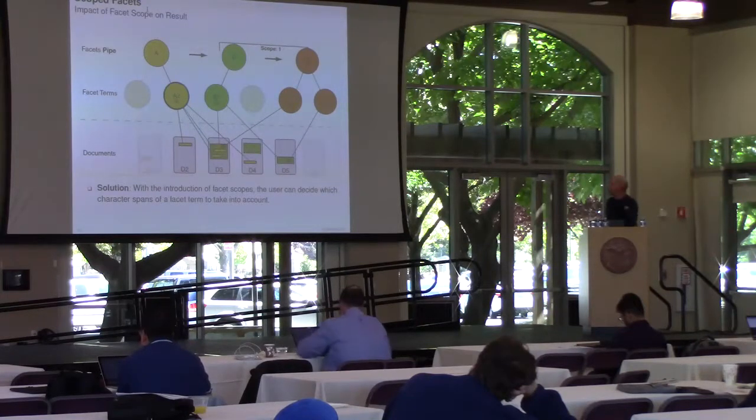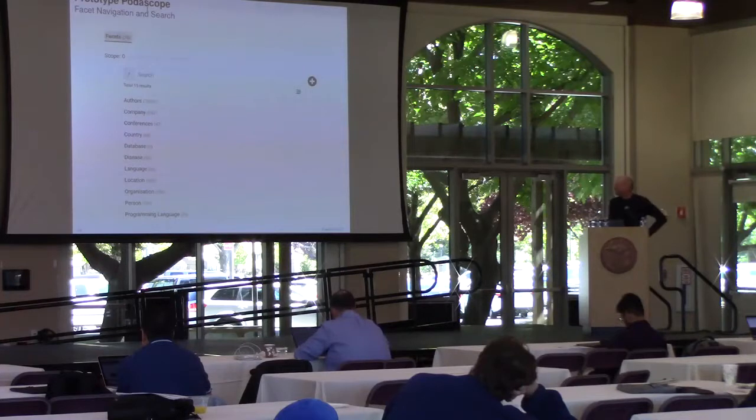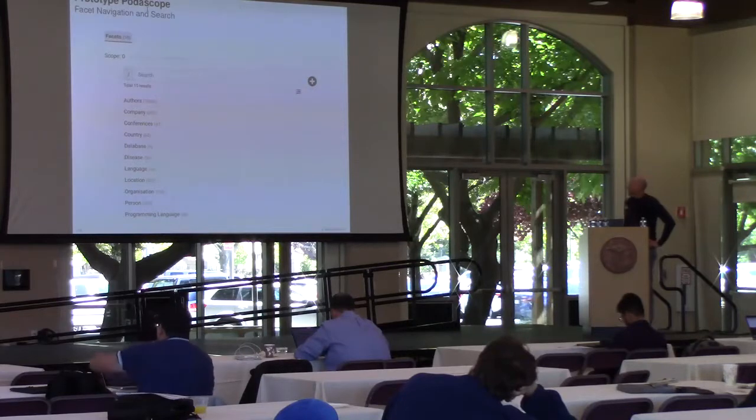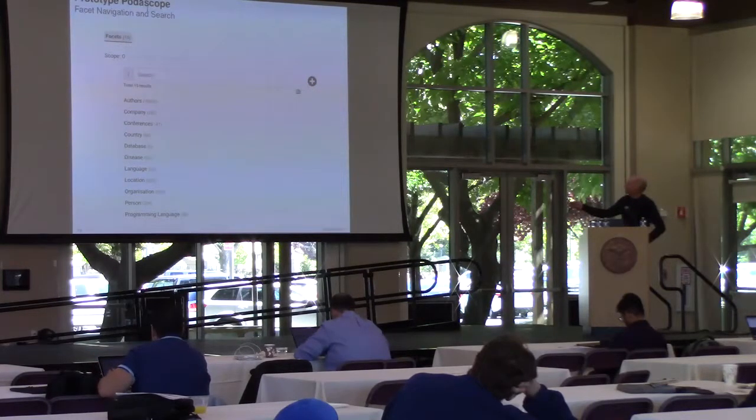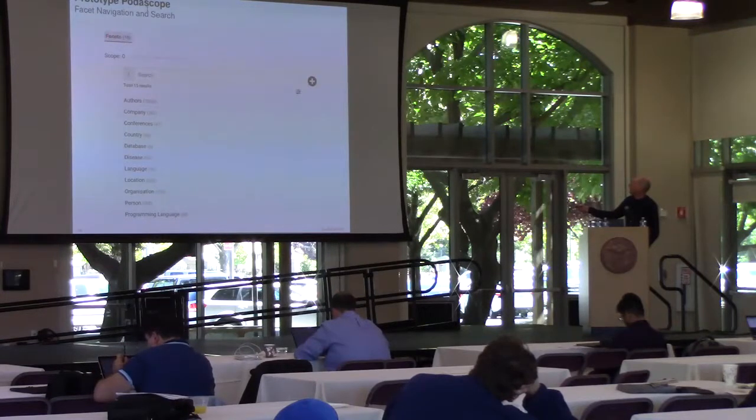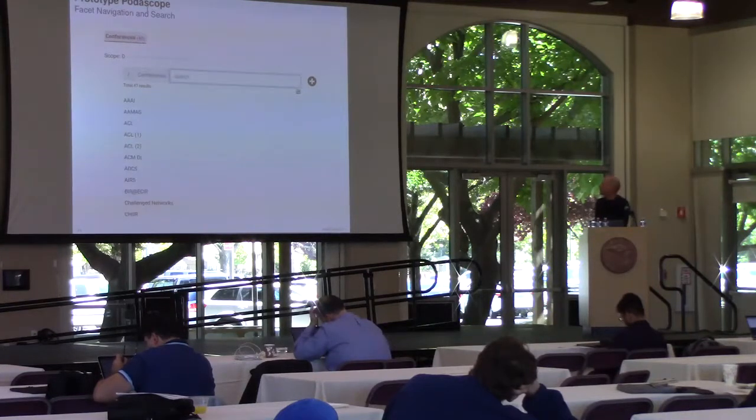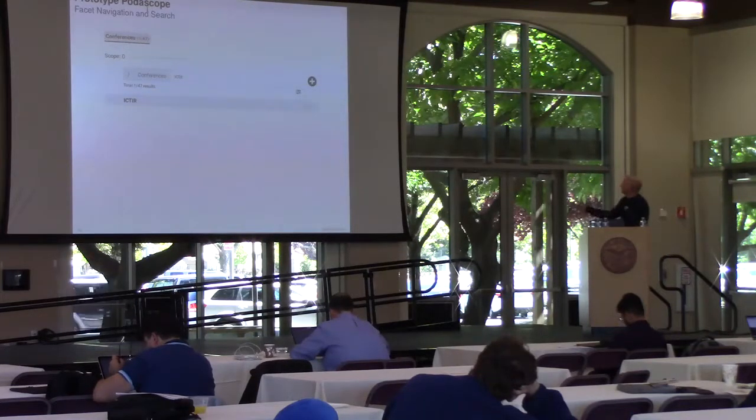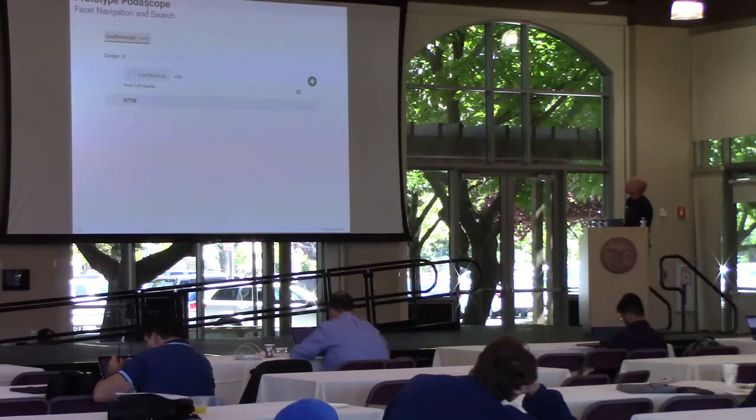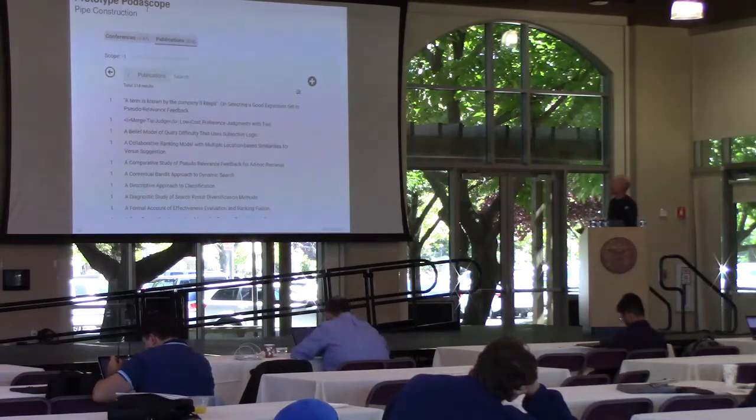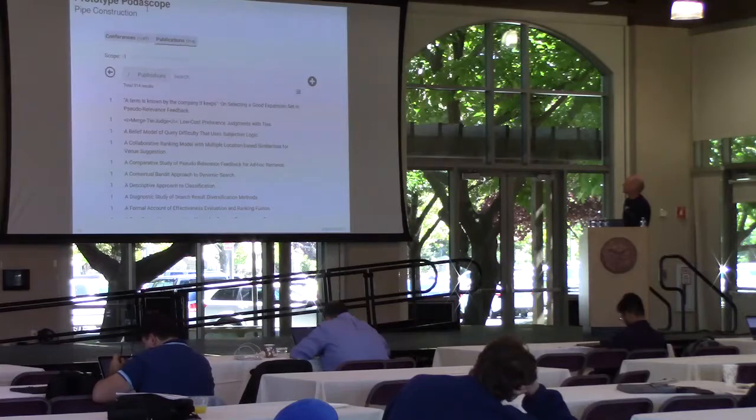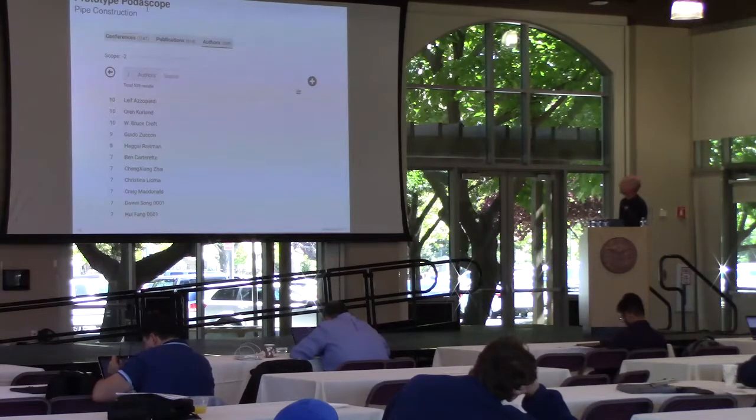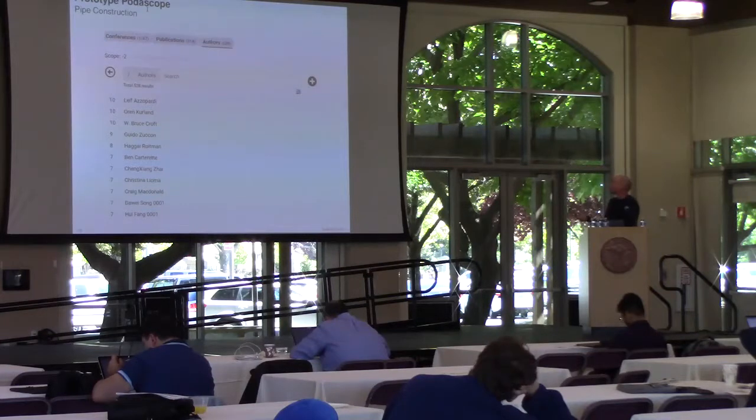This is the concept we introduced, and then we also implemented a prototype where we did a user study with. Here, what you can see is our facet pipe. It has only one element, and we can choose, for example, a corn thread as the first element. Search for ICTIR. Then we can add, by pressing plus, a new facet. Then select a publication, which gives us all the publications. We can add a new facet for authors, which gives us all the authors and how many papers they published.